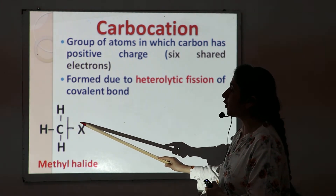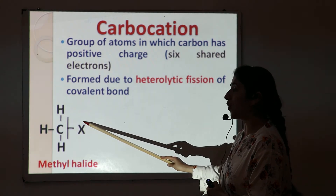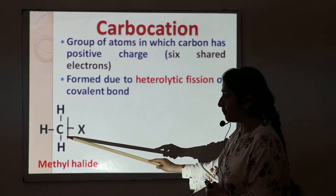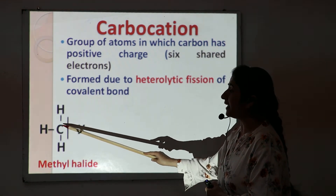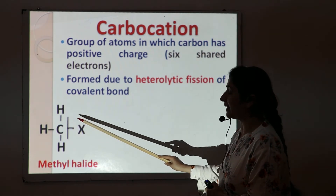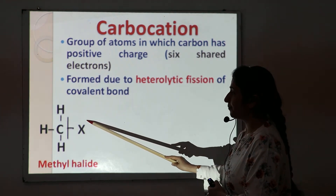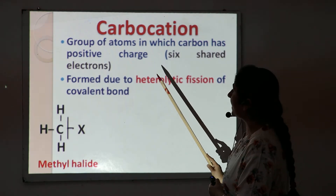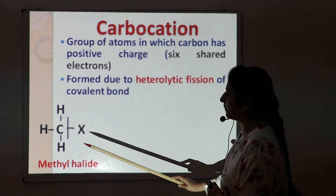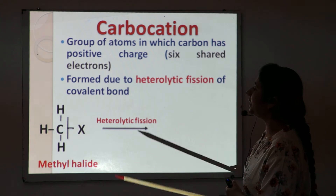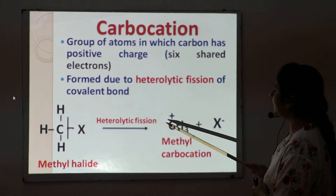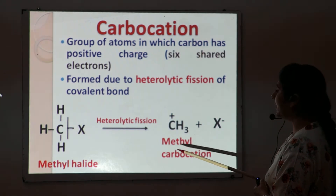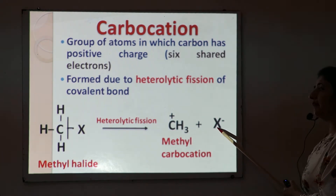So the halide has a tendency to withdraw the shared electrons toward itself, resulting in a breakage of the covalent bond. This carbon acquires a positive charge and the halide acquires a negative charge. So there is a heterolytic fission of the covalent bond, and this carbon forms a positive charge to give a methyl carbocation, and the other product is the halide ion.